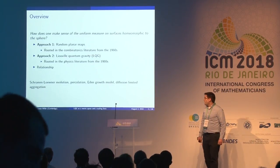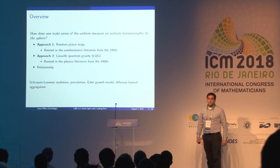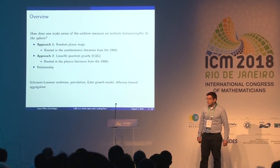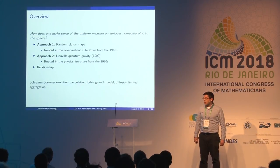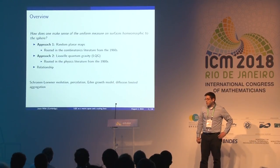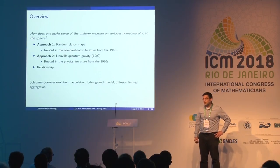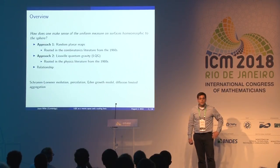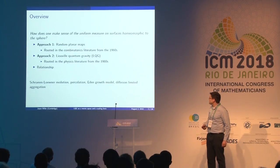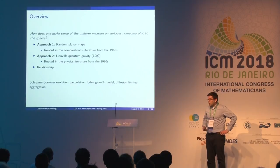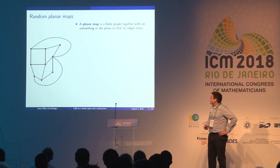The main result is that these two objects ultimately describe the same thing. The mathematical tools involved include the Schramm-Loewner evolution, the percolation model, and classical growth models from probability like the Eden model or diffusion limited aggregation.